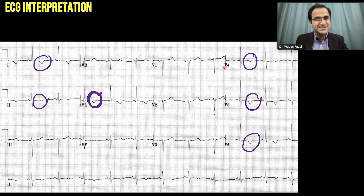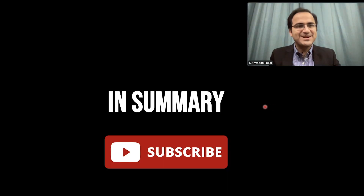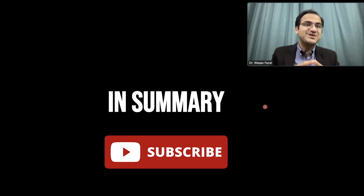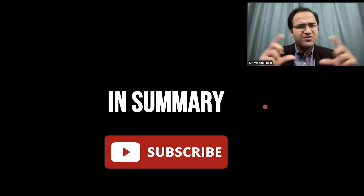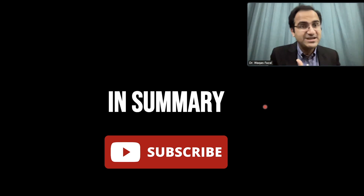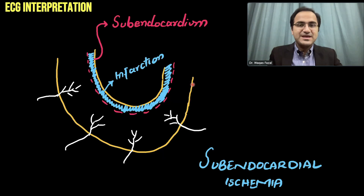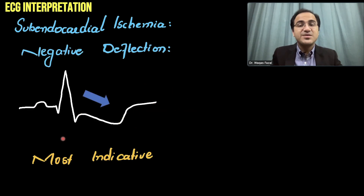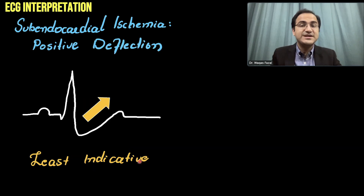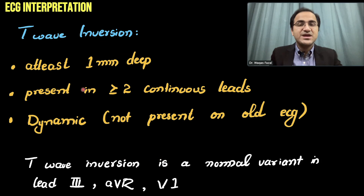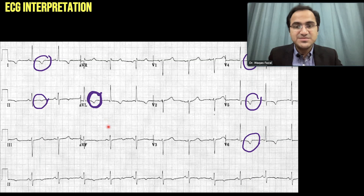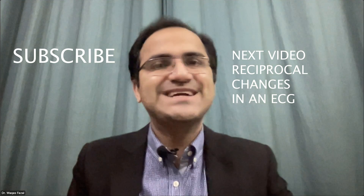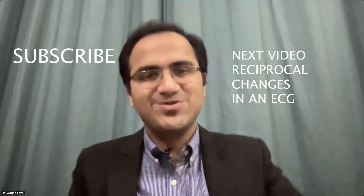In summary, we talked about what subendocardial ischemia is, how it appears on ECG, and the different patterns: negatively deflected (most indicative), no deflection (moderately indicative), and positive deflection (least indicative). T wave inversion also indicates subendocardial ischemia. Please subscribe and check out the other videos in this series on ECG interpretation made easy, rhythm interpretation including sinus blocks, atrial flutter, atrial fibrillation, ventricular tachycardia, and ventricular fibrillation with their managements.